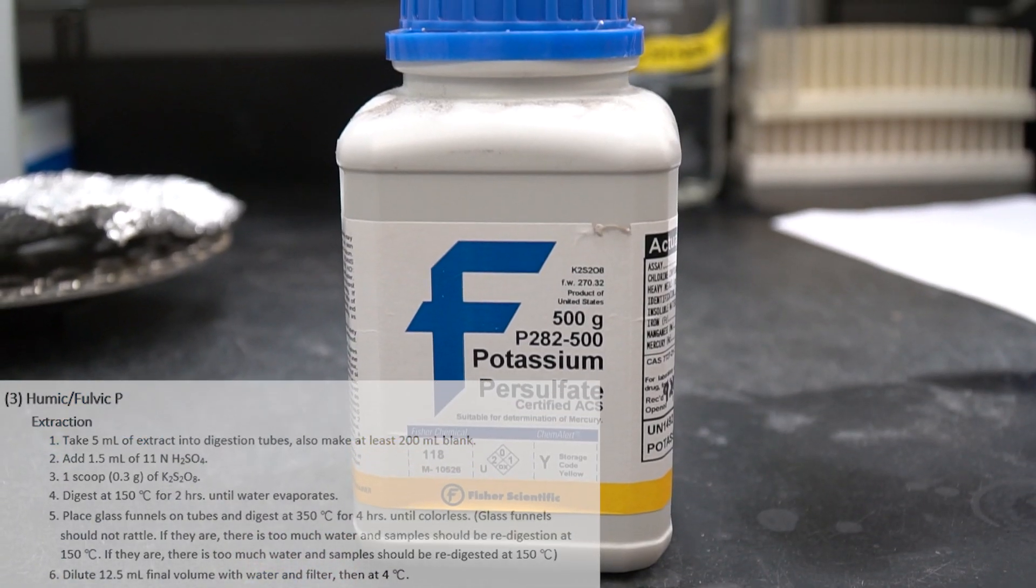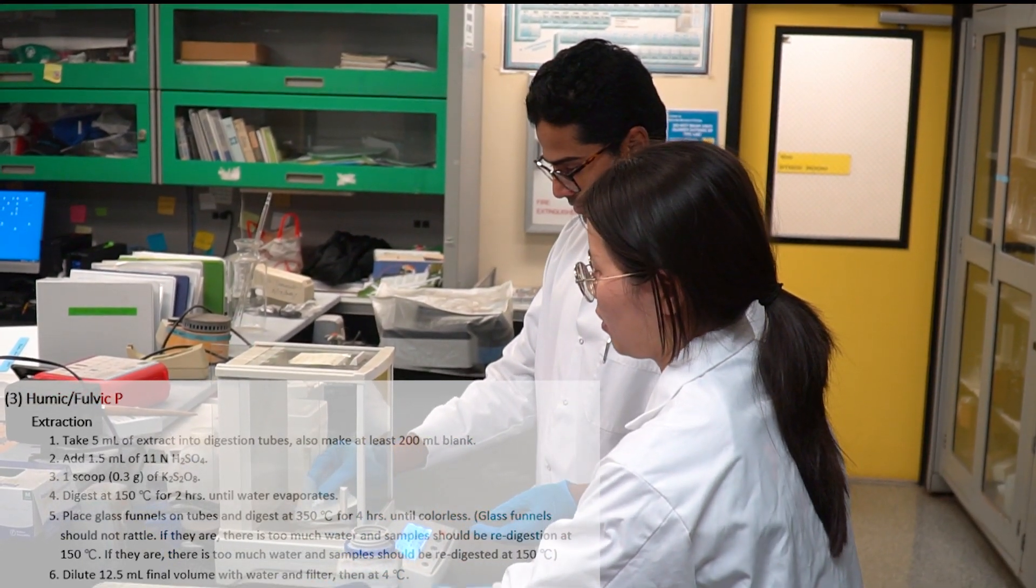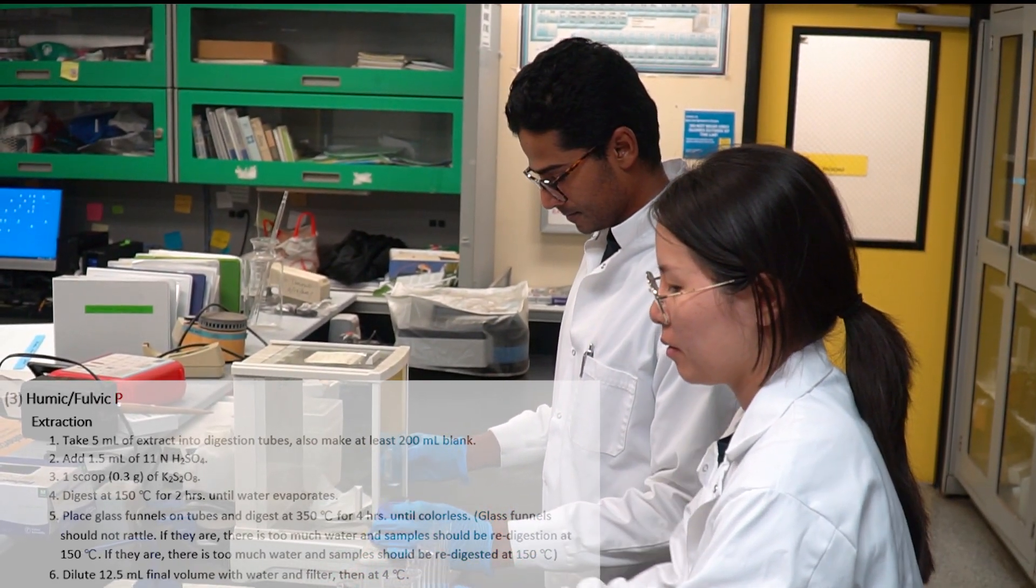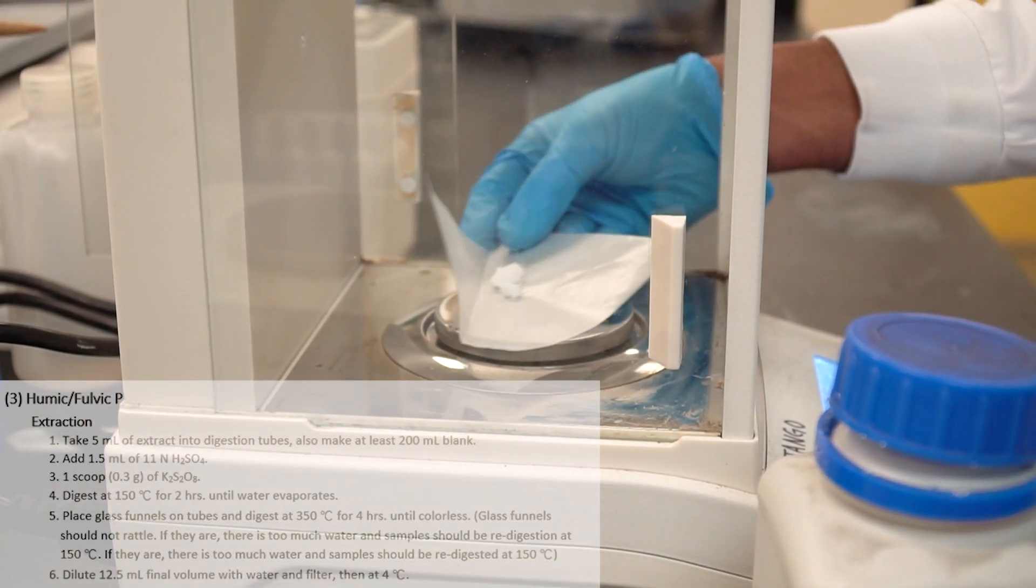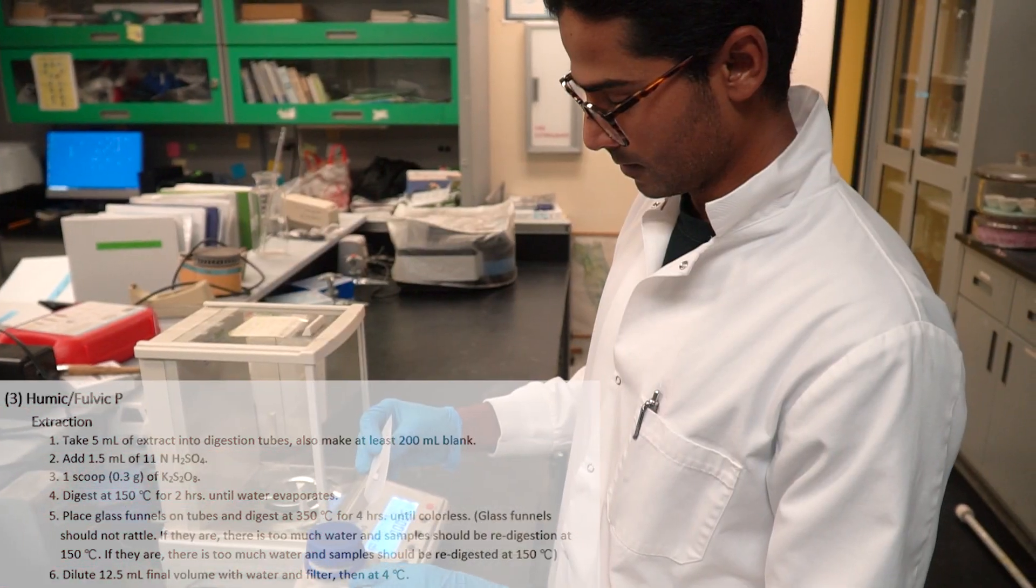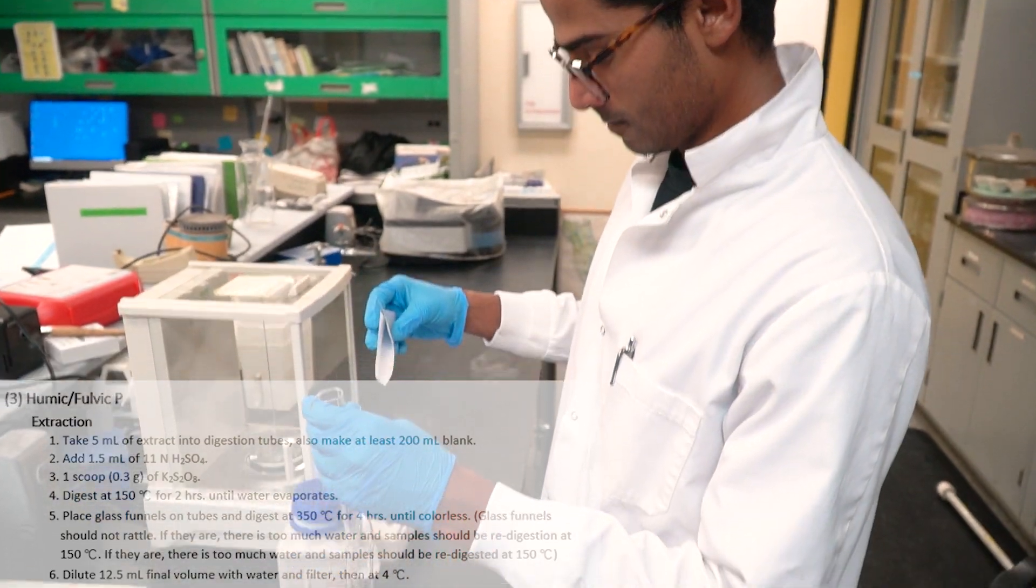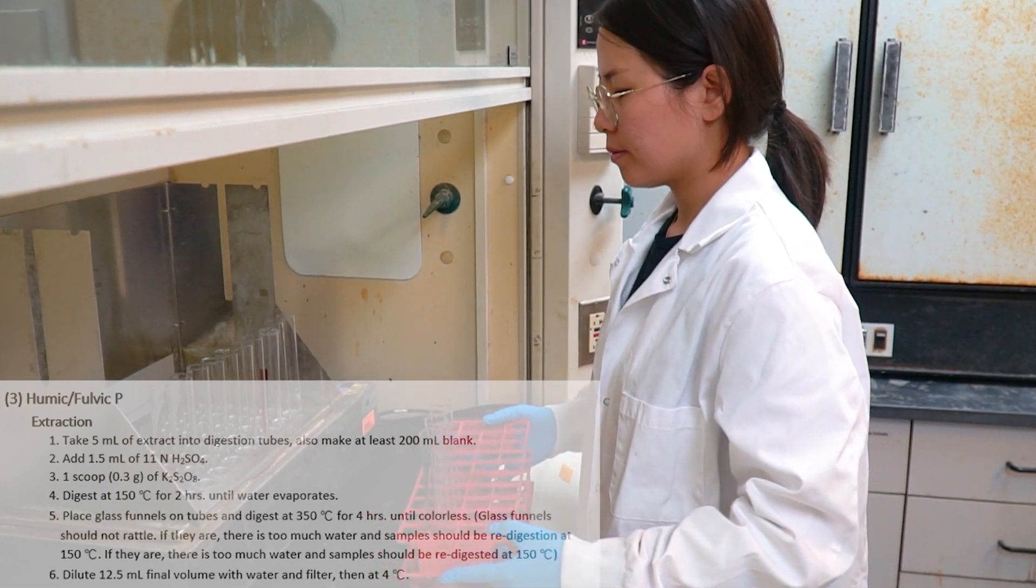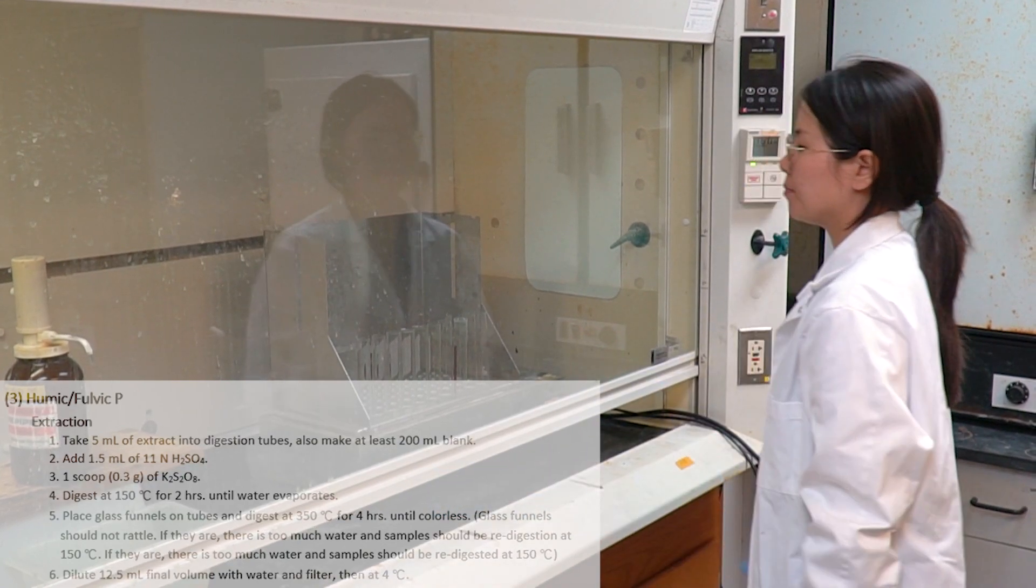For humic and fulvic P extraction, we have to take 5 milliliter of extract into digestion tubes. At the same time, we need blank. For blank, we have to use the same chemicals that we used before for iron and aluminum P, which is 0.1 normal sodium hydroxide. Then, we have to add 1.5 milliliter of 11 normal sulfuric acid. Then, 0.3 gram of potassium persulfate.